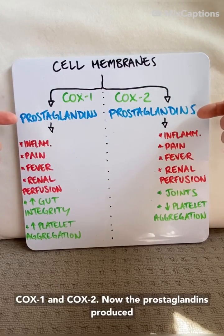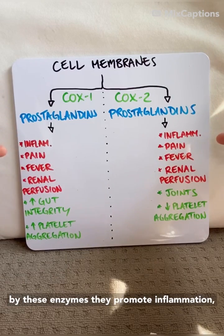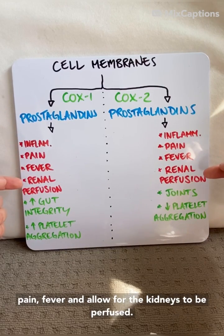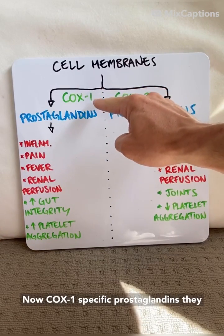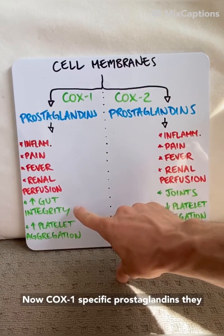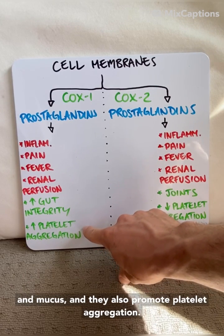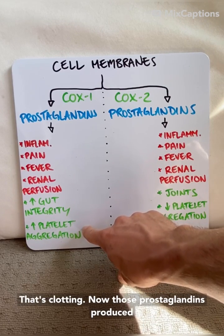The prostaglandins produced by these enzymes promote inflammation, pain, fever and allow for the kidneys to be perfused. COX-1 specific prostaglandins help maintain the integrity of the gut — so bicarbonate and mucus — and they also promote platelet aggregation, so that's clotting.